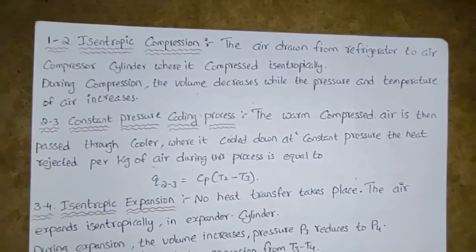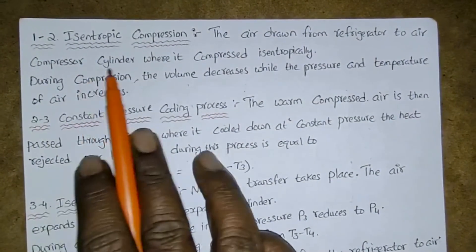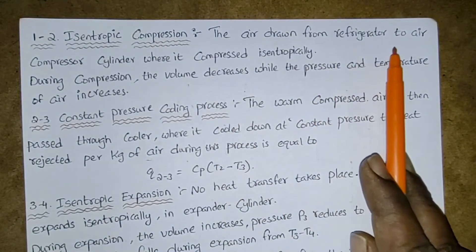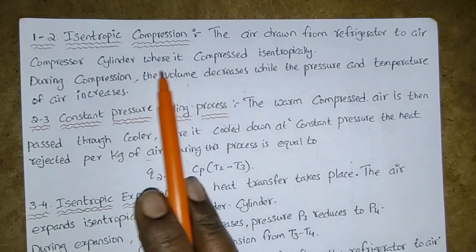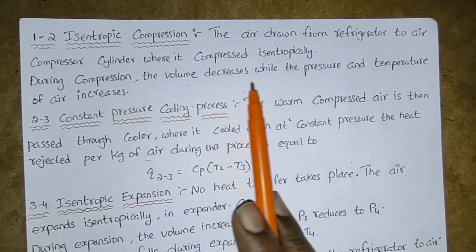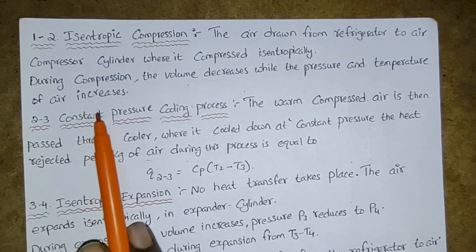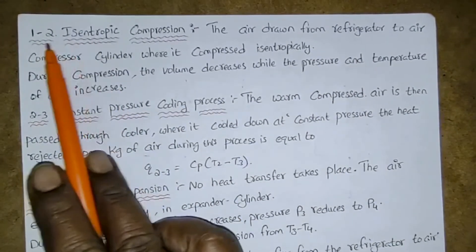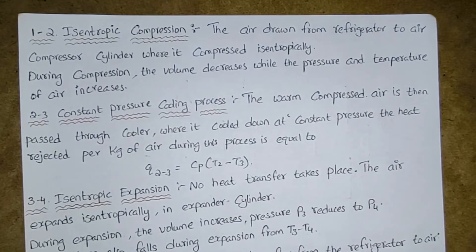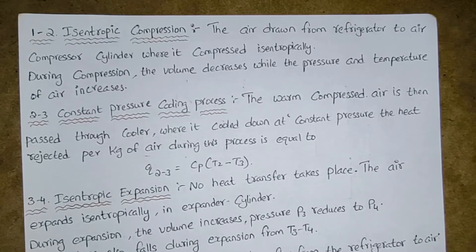Now we will come to know exactly what is happening at each and every stage. Process 1 to 2 — isentropic compression. The air drawn from the refrigerator to the air compressor cylinder where it is compressed isentropically. During compression, the volume decreases while the pressure and temperature of air increases. You have to write all these things in your exam; only then will you get good marks, because you are explaining each and every stage of the cycle.